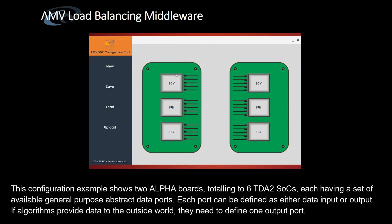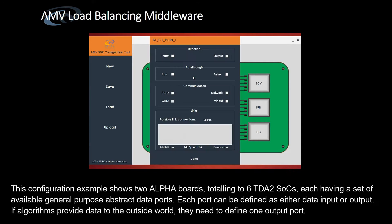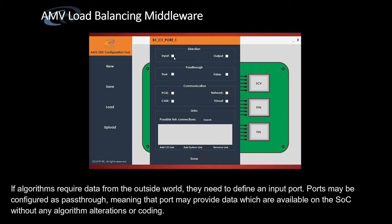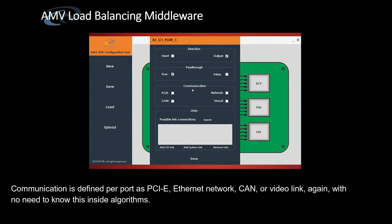This configuration example shows two Alpha boards totaling six TDA-2 SoCs, each having a set of available general purpose abstract data ports. Each port can be defined as either data input or output. If algorithms provide data to the outside world, they need to define one output port; if algorithms require data from the outside world, they need to define an input port. Ports may be configured as pass-through, meaning a port may provide data already available on the SoC without any algorithm alterations or coding. Communication is defined per port as PCIe, Ethernet network, CAN or video link — again with no need to know this inside the algorithms.